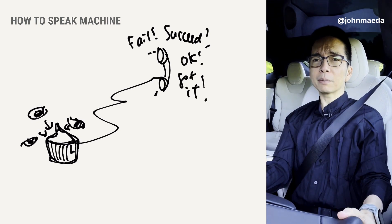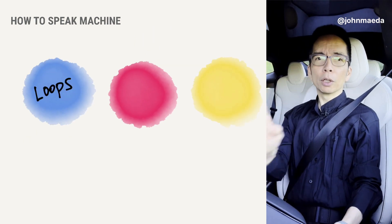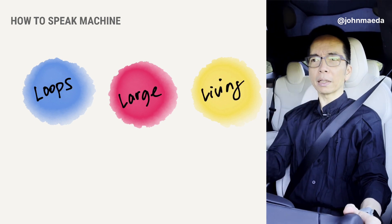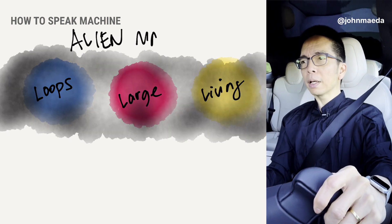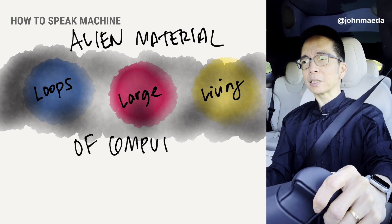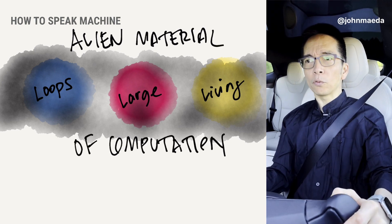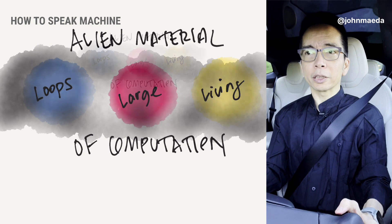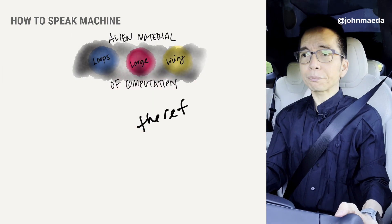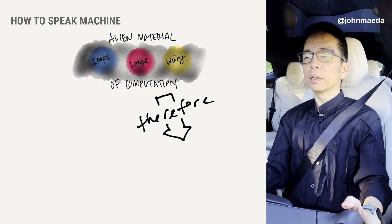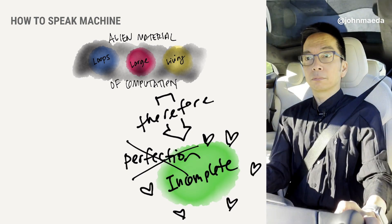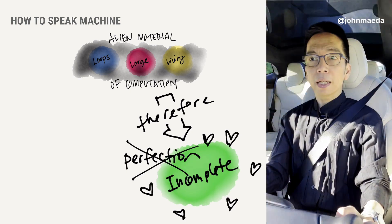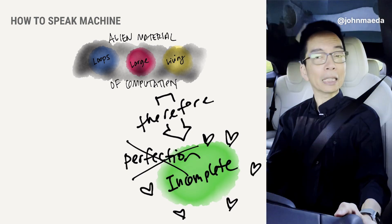And that's the power of computation, chapter 5. Remember: loop, large, living — the physics of computation. And because it's an alien form of product construction, you're able to make things that are incomplete. It's weird, right? And you can instrument them.